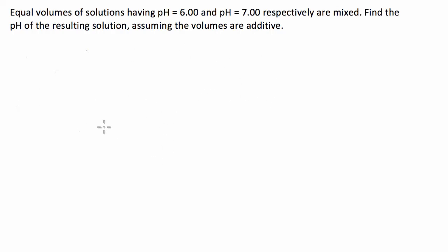G'day guys, got a chemistry question for you today. We've got two solutions with equal volume which have pHs of 6 and 7. We're going to mix them together and we've got to find the pH of the resulting solution. We've got to assume the volumes are additive.